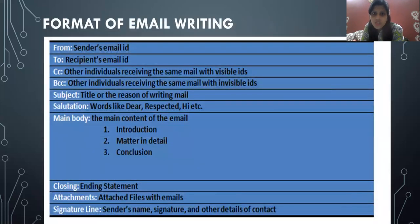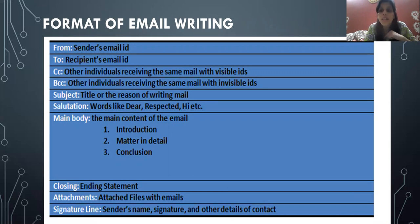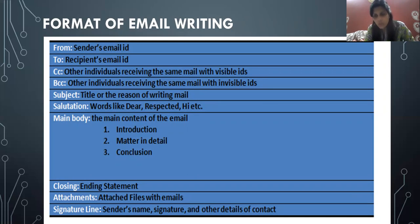Now, the format of email writing. Please take a screenshot of it or write it down. Draw a big rectangular box. On top, draw three lines. The first thing should be 'From' — meaning who is writing this email. For example, if I am writing the email, I will write my email ID. Then 'To' — to whom you are sending. If I am writing this email to Karishma, I will write her email ID in the 'To' field.